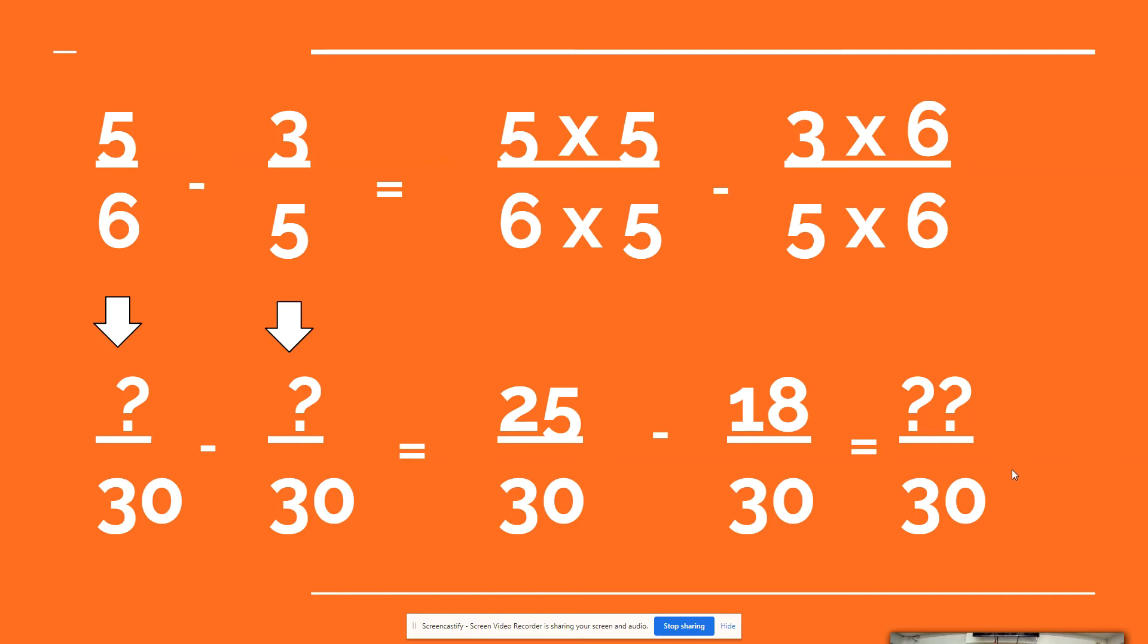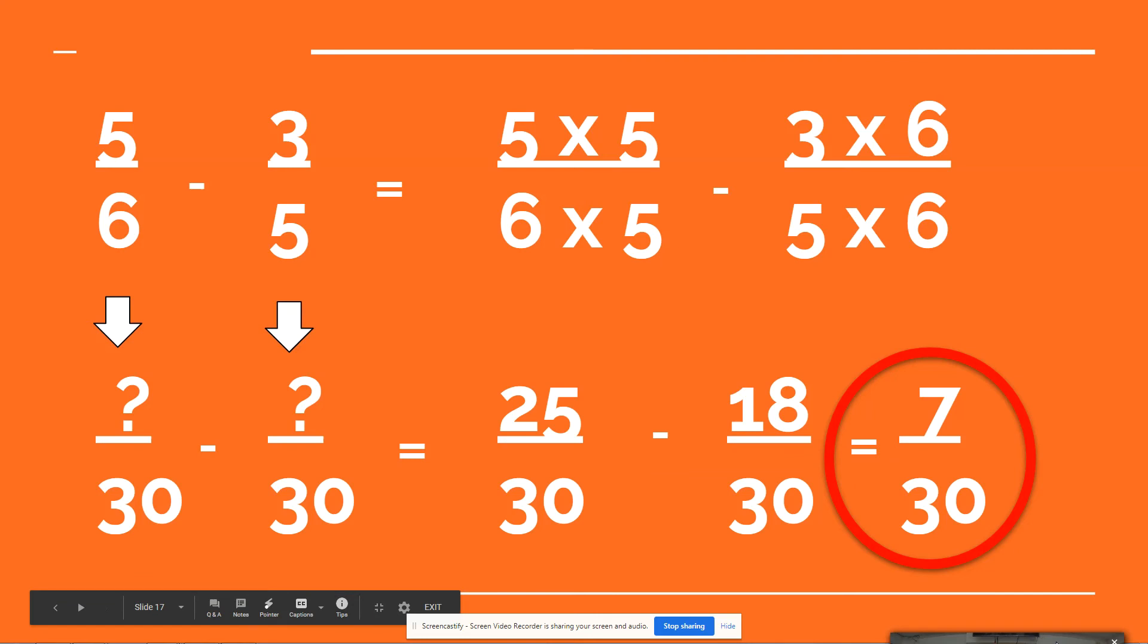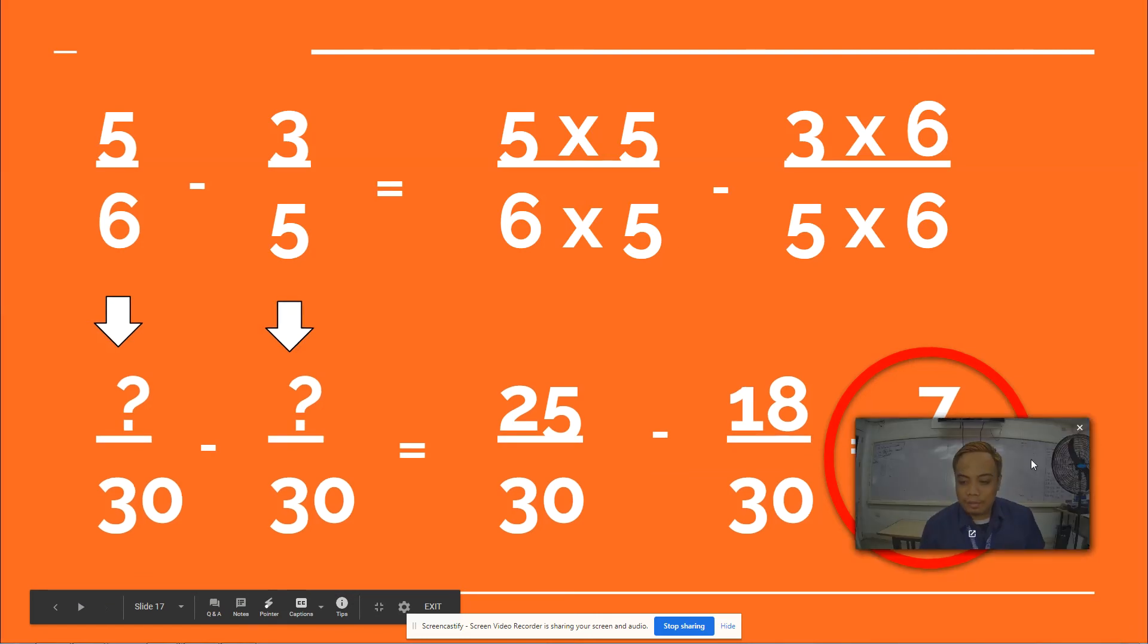First, let's copy the denominator which is 30. 25 minus 18 is 7. Our final answer is 7 over 30. We will watch another video for mixed numbers. Thank you.